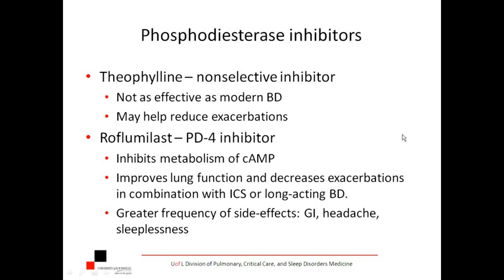Theophylline is a non-selective inhibitor of phosphodiesterase — it's been around 60 or 70 years and isn't used very much anymore because modern drugs are much better at bronchodilation. But it can be used, especially at low doses, to help reduce exacerbations. I use it very infrequently, only in patients I've optimized who are still having frequent exacerbations. Roflumilast is a specific phosphodiesterase IV inhibitor, which inhibits metabolism of cyclic AMP so it stays up — smooth muscles stay relaxed. It does improve lung function and decrease exacerbations, but must be used in combination and causes significant GI side effects.